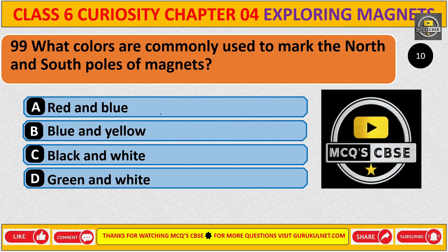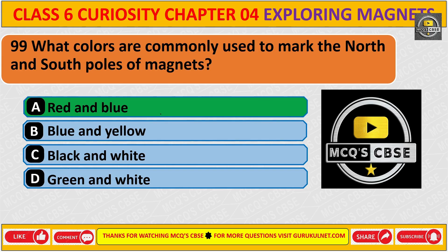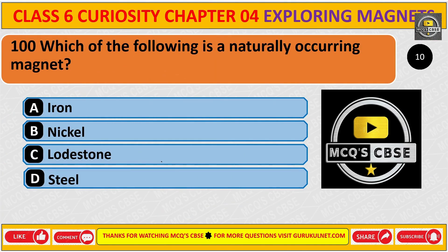What colors are commonly used to mark the north and south poles of a magnet? Which of the following is naturally a ring magnet? The correct answer is C. Lodestone.